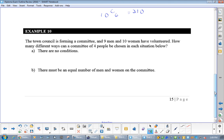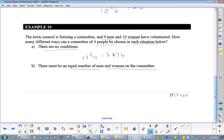A student council is forming a committee. There's 9 men, 10 women who volunteered. How many different ways can a committee of 4 people be chosen in each situation below? Okay? Well, if you're just picking 4 people and there's no conditions, I only have 19 and I will choose 4. Which is 3, 8, 7, 6.